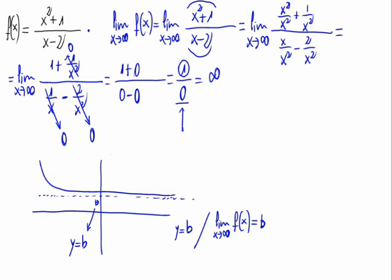So, have we obtained a value when x approaches infinite? No, we've obtained infinite, not a real number, and this means that the function doesn't have horizontal asymptotes.